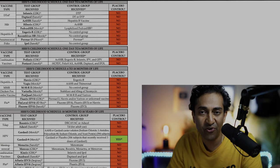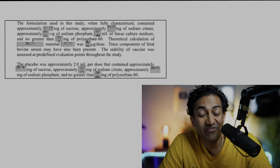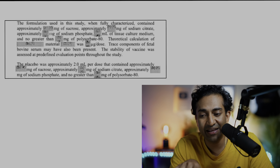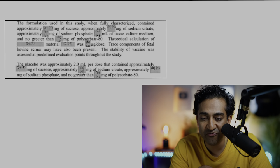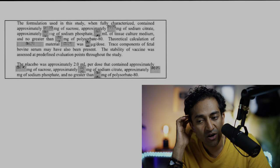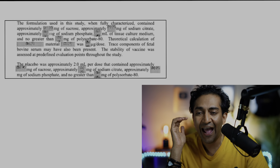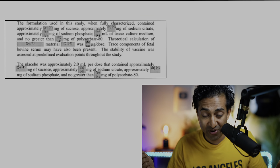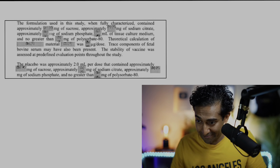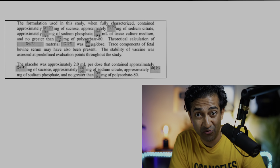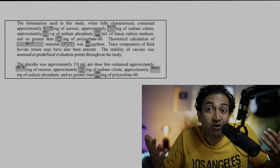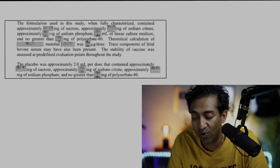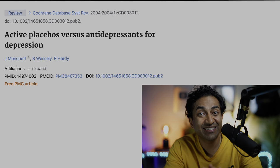I'm happy to concede that active placebos in vaccine studies mask some short-term safety signals. The part I have difficulty conceding is that you would detect rare longer-term safety concerns, because you'd struggle with the power issue. One vaccine FOIA document shows the placebo was two mLs of sucrose, sodium citrate, sodium phosphate, and no greater than X milligrams of polysorbate 80 — many of the same ingredients in the actual vaccine. The argument that those ingredients could cause local site reactions is well-taken, but whether low doses cause long-term sequelae is something I'm generally skeptical of.